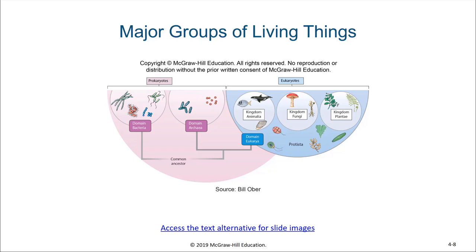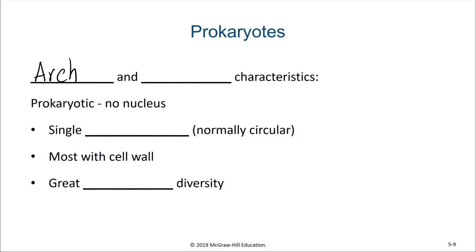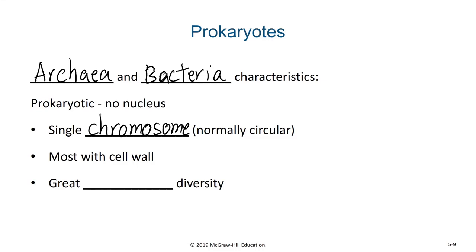What are some characteristics of archaea and bacteria? First off, these cells are prokaryotic in that they do not have a nucleus. They have genetic material, cytoplasm, a plasma membrane, and ribosomes, but they do not have internal organelle compartments — especially not one that stores their genomic DNA. They have a single chromosome, which is normally circular. They'll likely have cell walls in addition to their plasma membrane, and they have great metabolic diversity. They can get their energy from their environment in a variety of different ways, which is normally limited in more complex organisms.